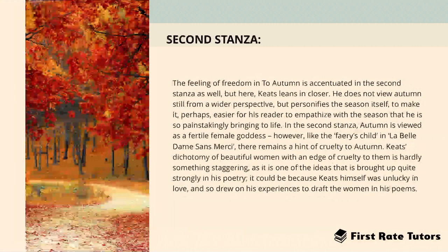In the second stanza, autumn is viewed as a fertile female goddess. However, like the fairy's child in 'La Belle Dame Sans Merci,' there remains a hint of cruelty to autumn as a woman. Keats's dichotomy of beautiful women with an edge of cruelty is a strong theme in his poetry, and it could be because Keats himself was unlucky in love, drawing on his experiences to draft the women in his poems.